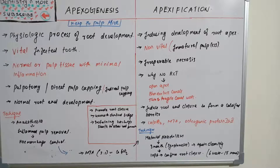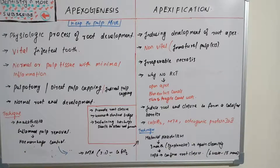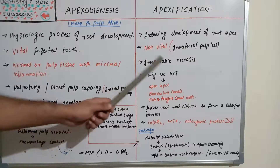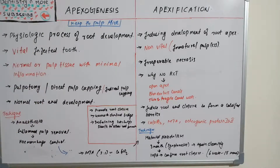Root closure is verified using a file, and if confirmed, the process is finished. It is a lengthy process that can take anywhere from six weeks to eighteen months, depending on root closure, maturity, root length, and other factors involved. In summary, apexogenesis creates a normal environment where the root can grow naturally, while apexification creates a barrier to close the root end. That's all about apexogenesis and apexification — thank you for watching.